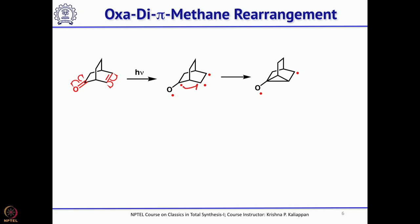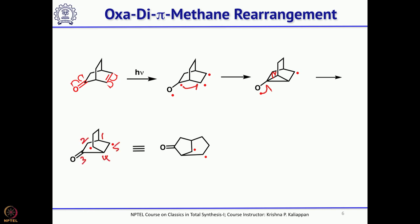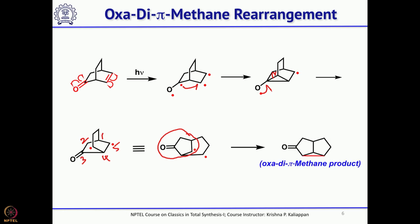The radical on the oxygen comes back and opens this cyclopropane to give a bicyclic diradical, which can be redrawn to show a 5-membered ring and a 6-membered ring. These two diradicals combine to form a tricyclic compound where the third ring is a cyclopropane. This is the oxa-di-pi-methane rearranged product, easily obtained from any bicyclic compound having a carbonyl and double bond at appropriate positions.